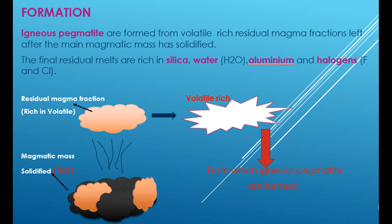From the original process of magmatic differentiation, first magma solidifies, and then the remaining fraction of residual magma, which is rich in volatiles, results in the formation of igneous pegmatites following later. Usually this process takes place under high temperature.